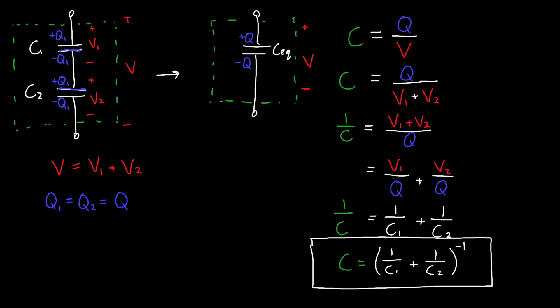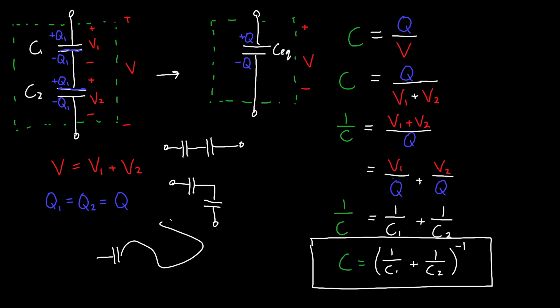I've drawn the series capacitors stacked on top of each other, but you'll see them in many configurations. The key is that series capacitors are connected at one point only — by a single wire — and nothing else can be connected to that junction. If another capacitor were connected there, it would no longer be a series connection. That connection must only join the two capacitors and nothing else.